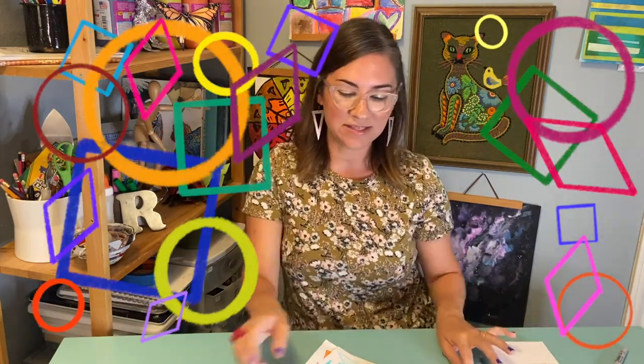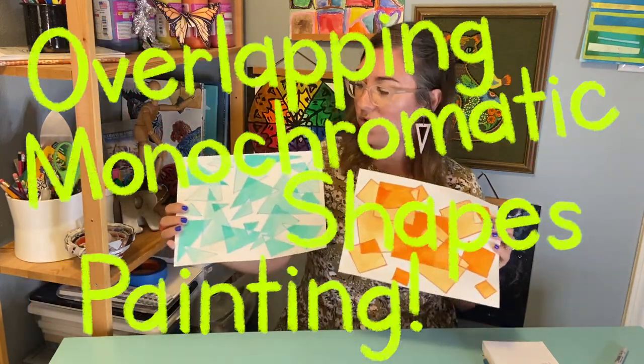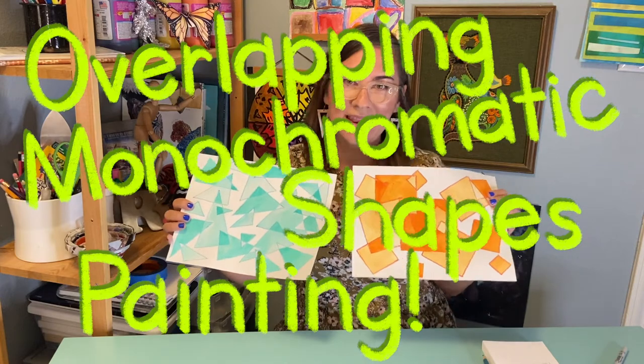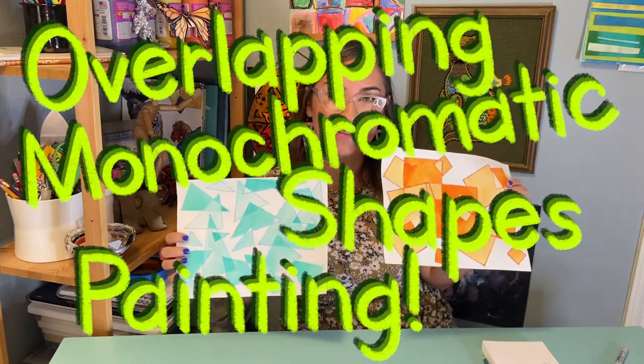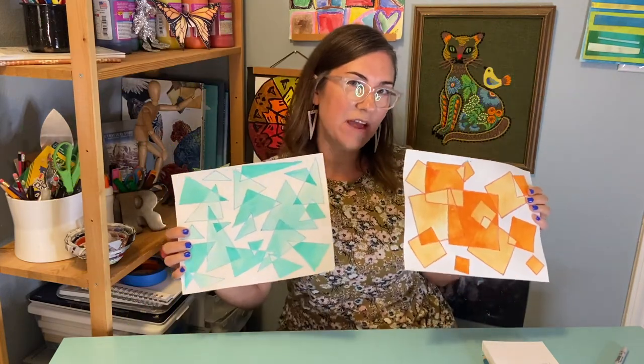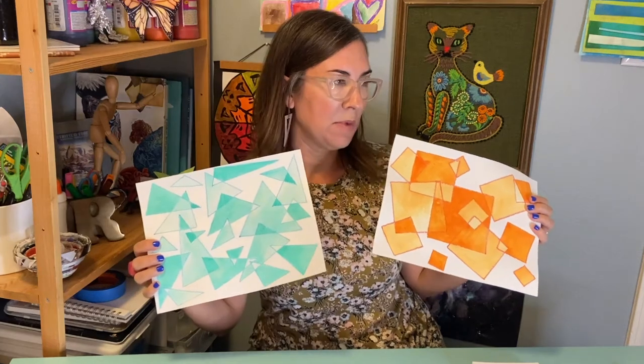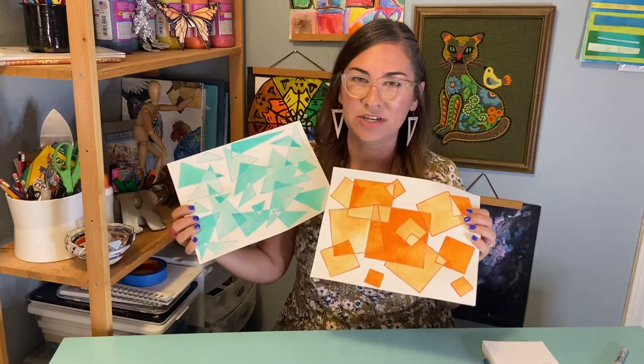Today, we're going to be using some shapes to make a cool painting. We're going to be making overlapping monochromatic shapes paintings. Can you say that five times fast? Overlapping monochromatic shape paintings. No, I can't. Anyway, I'm really excited about this project.